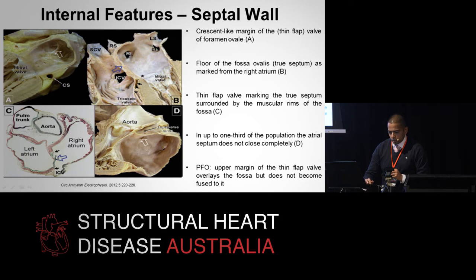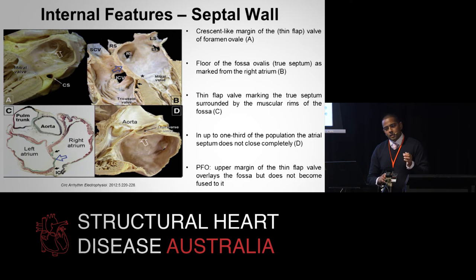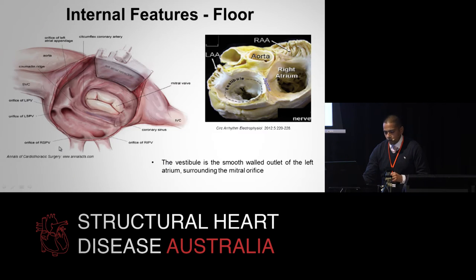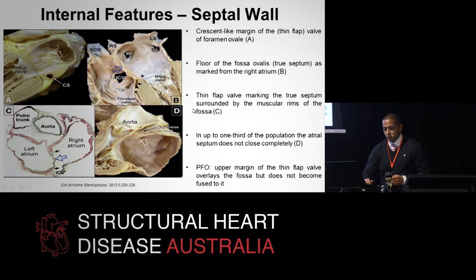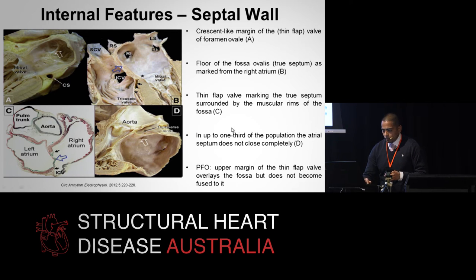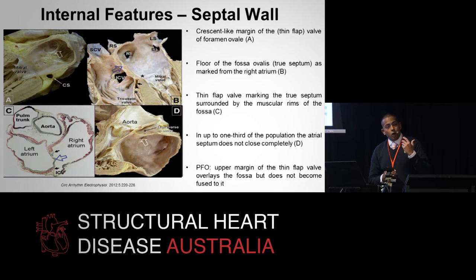You need to compare that to the muscular rims on either side, which some regard as the muscular septum, but it's not the true septum. If you did a transeptal puncture from the right atrium into this more anterior muscular septum, you may end up in the transverse sinus or worse still in the aorta. Changing tack — up to about one third of the population has an atrial septum that doesn't completely close, resulting in a patent foramen ovale, where the upper margin of the thin flap valve overlays but doesn't fuse to the fossa.